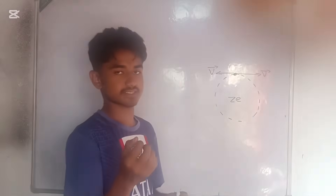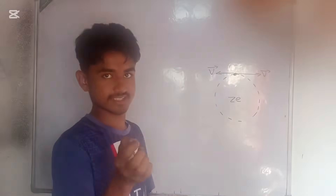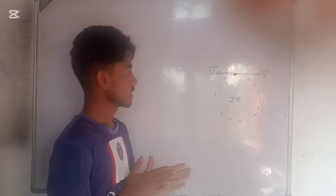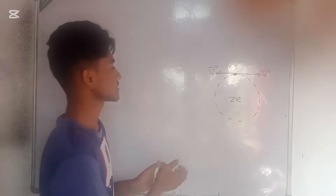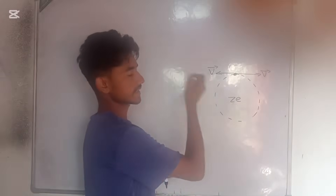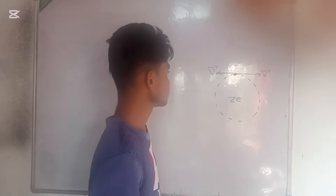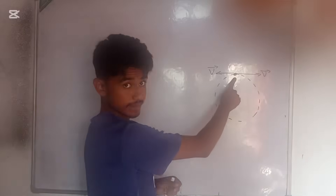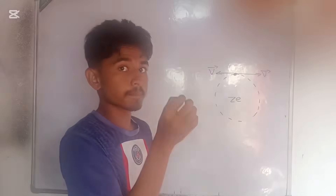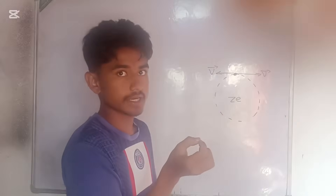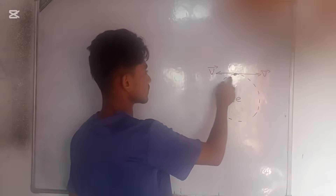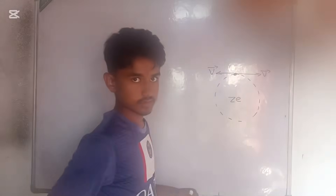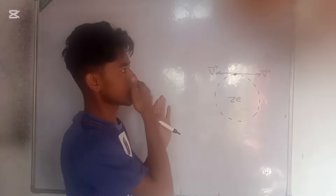Now let us do some maths regarding the Zeeman shift effect. For our better convenience I am assuming that the nucleus is at rest, and there will be some velocity for the electron. We are just doing this by the classical idea, and the velocity of the electron could be in either direction — we don't know.